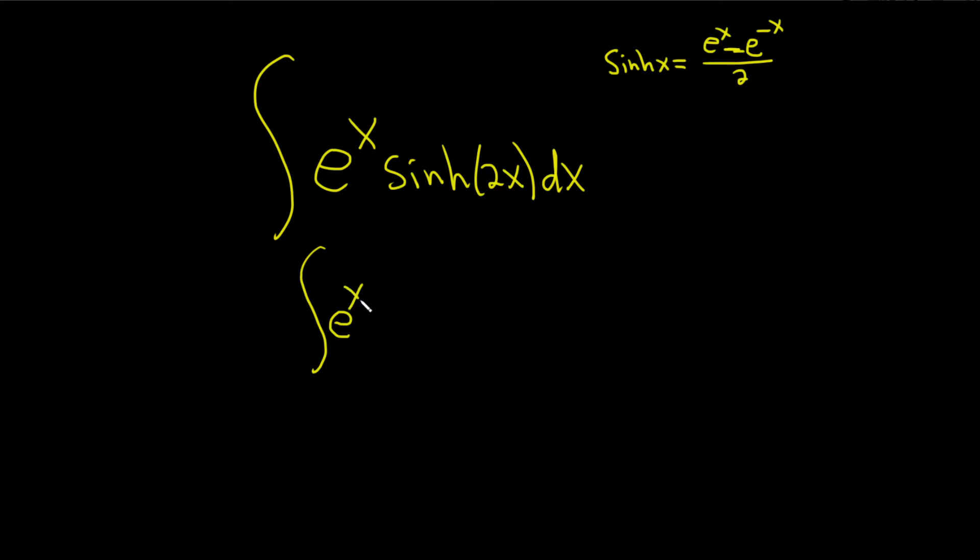So we have e to the x, and then we have sinh of 2x. So instead of x, we're going to put a 2x here in this formula. So parentheses e to the 2x minus e to the negative 2x, that's all over 2, and then parentheses, and then we have our dx.